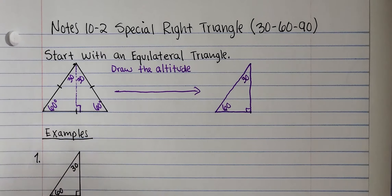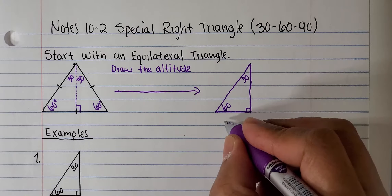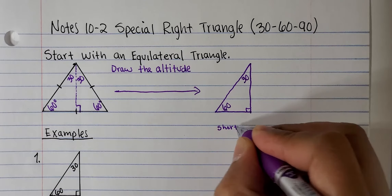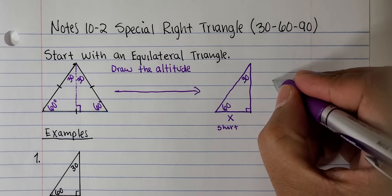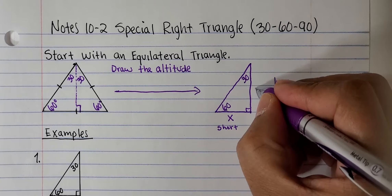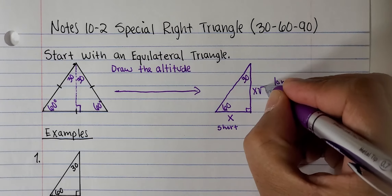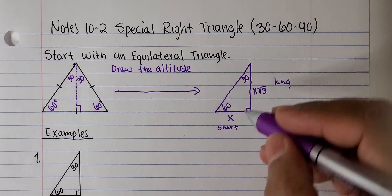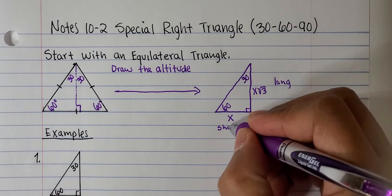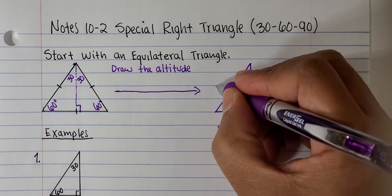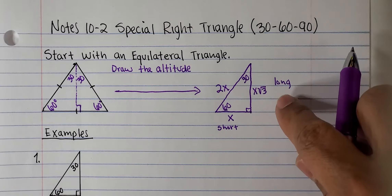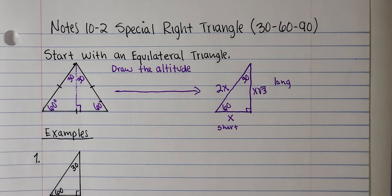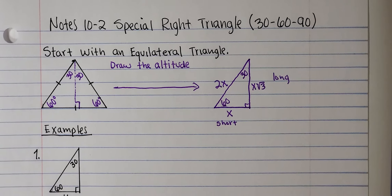Specifically, a 30-60-90 special right triangle. The pattern for this one is: the short leg is called X, the long leg is always X times the square root of 3, and the hypotenuse is always 2 times the length of the short leg, so that's 2X. That's the pattern, and we are going to apply it on the next few problems.